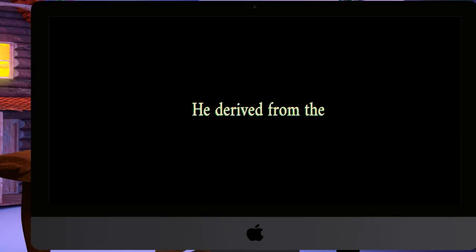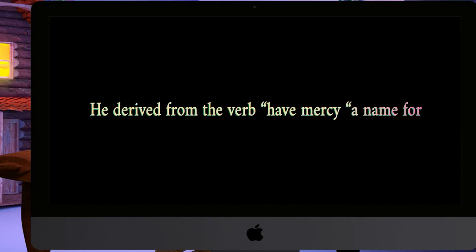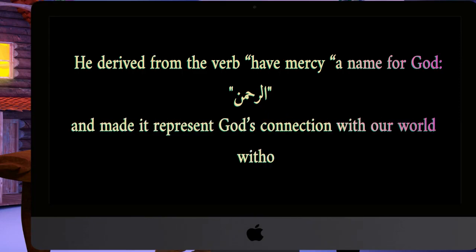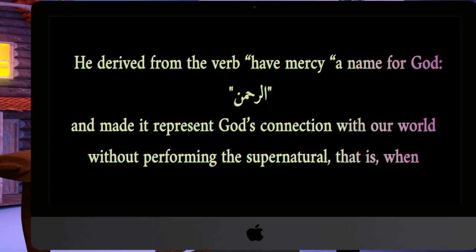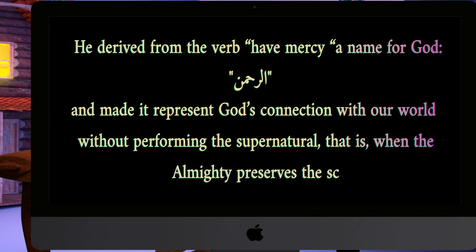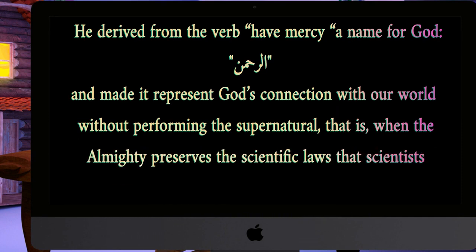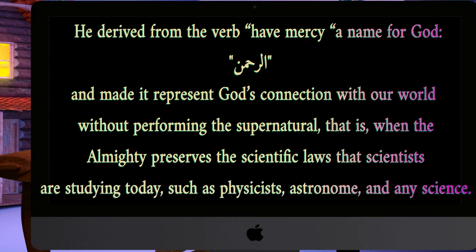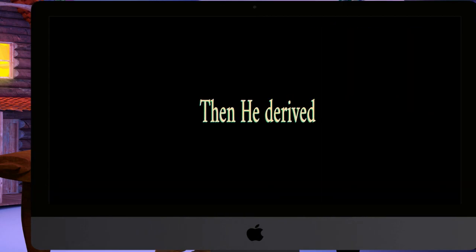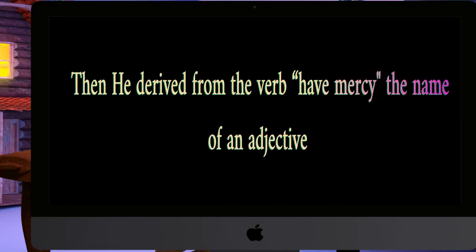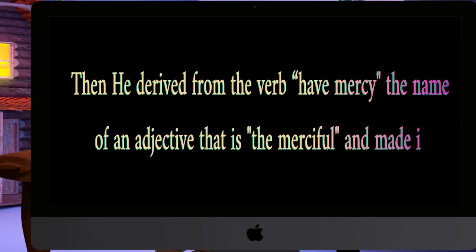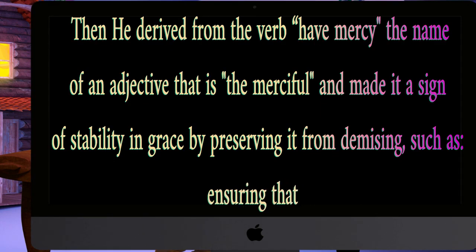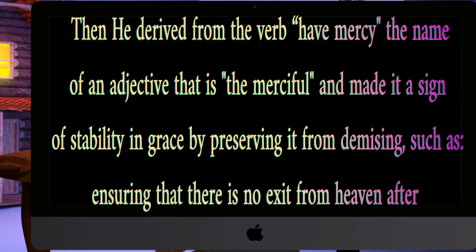He derived from the verb of mercy a name for God, and made it represent God's connection with our world without performing the supernatural — that is, when the Almighty preserves the scientific laws that scientists such as physicists, astronomers, and others are studying today. Then he derived from the verb of mercy the name of an adjective, that is 'the merciful,' and made it a sign of stability and grace by preserving it from demising — such as ensuring there is no exit from heaven after entering it.